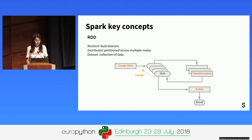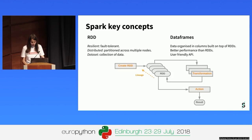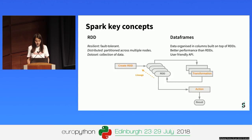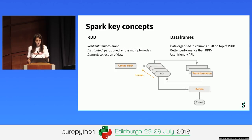In our accounting pipeline, we didn't use RDDs directly but decided to work with Spark data frames. Spark data frames are units of data organized in columns, built on top of RDDs, but their performance is better than raw RDDs since optimizations are applied before the actual operations are executed. Also, the data frames API is more user-friendly than the RDDs API.